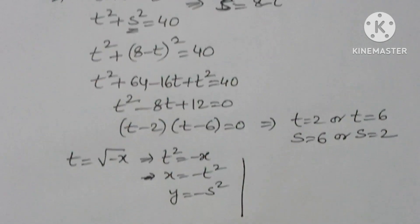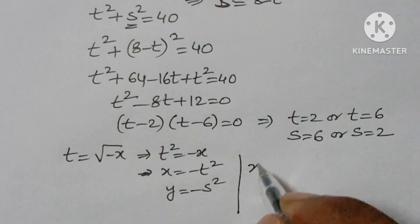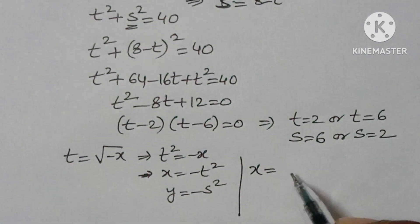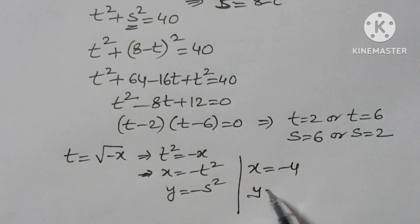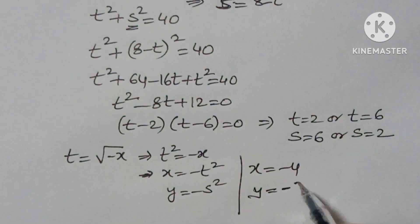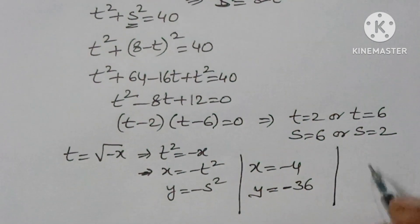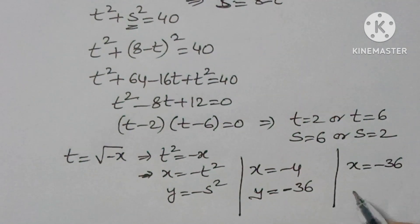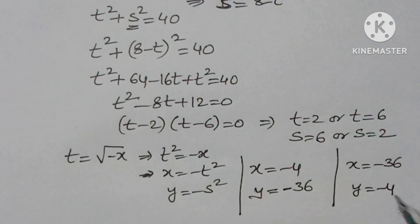Substituting the values of t and s: if t = 2, then x = −4 and y = −36. For the second case, if t = 6, then x = −36 and y = −4.